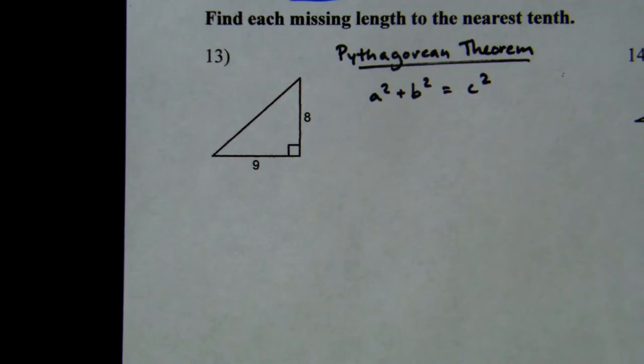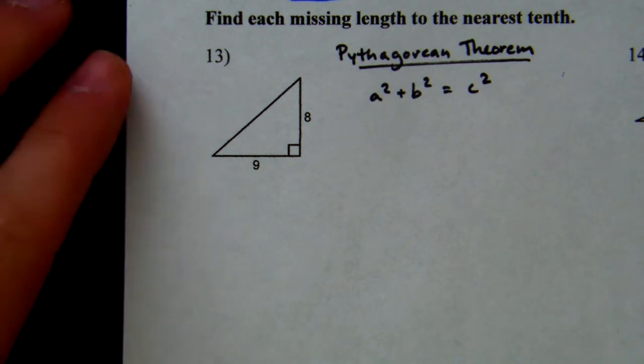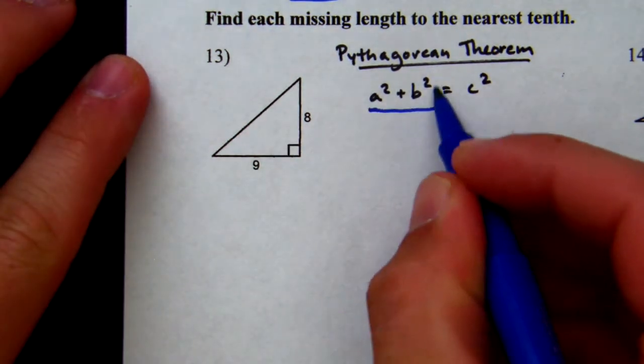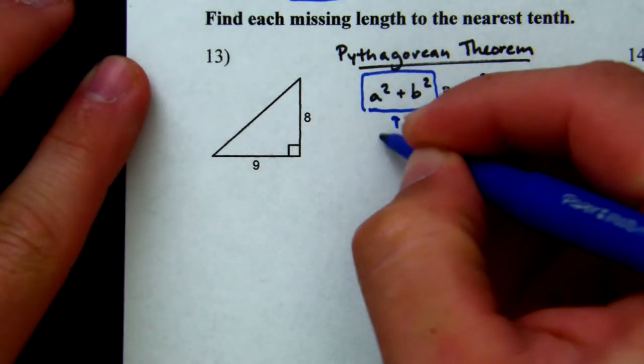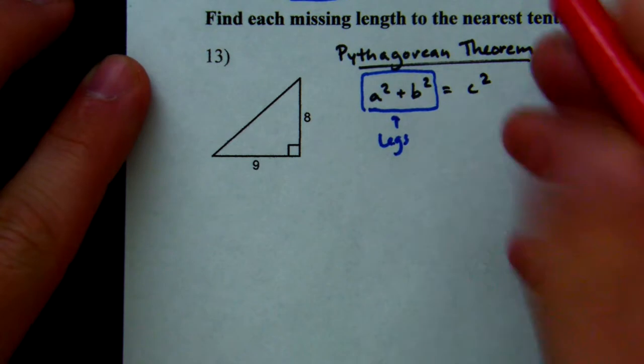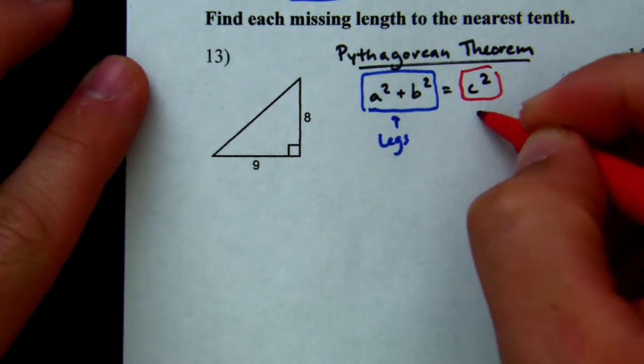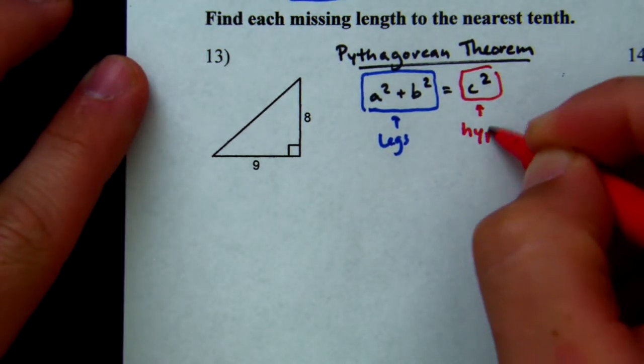Alright, right triangles using the Pythagorean Theorem. If we remember what the Pythagorean Theorem is, the formula is a squared plus b squared equals c squared. And if we remember, the a and the b are going to represent our legs. These are the legs. And our c is going to represent what we call the hypotenuse.